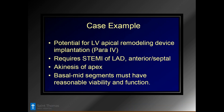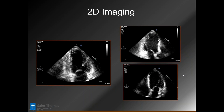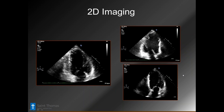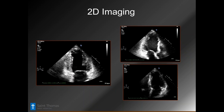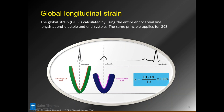Another case example: the parachute device, which goes into the ventricle and remodels it. Patients were required to have STEMI of the LAD in the anterior septal segment — generally looking for people with apical akinesis and some reasonable amount of function at the base and mid sections. This is a classic case: dead apex, some contractility in the base and mid sections in all three views — a perfect patient for this.